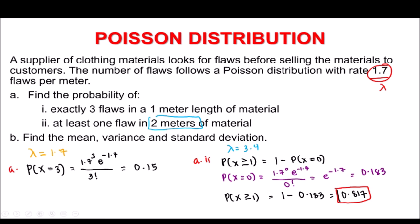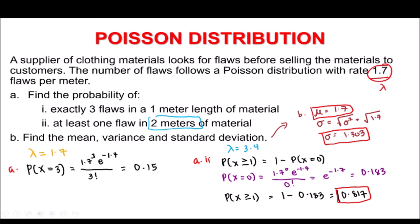For part D, find the mean, variance, and standard deviation. The mean (expected value) of a Poisson distribution always equals lambda, so the mean = 1.7. The variance also equals lambda = 1.7. Since standard deviation is the square root of the variance, the standard deviation = √1.7 ≈ 1.303. That's how you calculate the mean and standard deviation for a Poisson distribution.